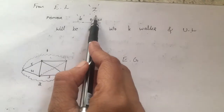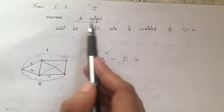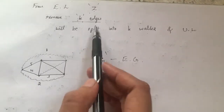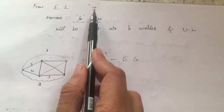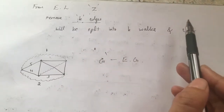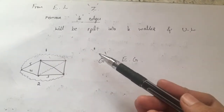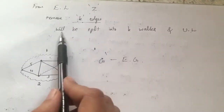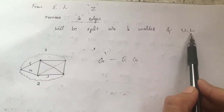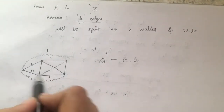Now from that Euler line z, I am removing the k edges which were just added. Removing these edges splits the Euler line into k walks, and each walk is a Unicursal line. Specifically, if I remove the first added edge between v1 and w1, I get one subgraph which is a walk and is a Unicursal line. If I remove the second edge I get another Unicursal line, and so on. Removal of all k added edges splits the graph into k subgraphs, each being a Unicursal line.